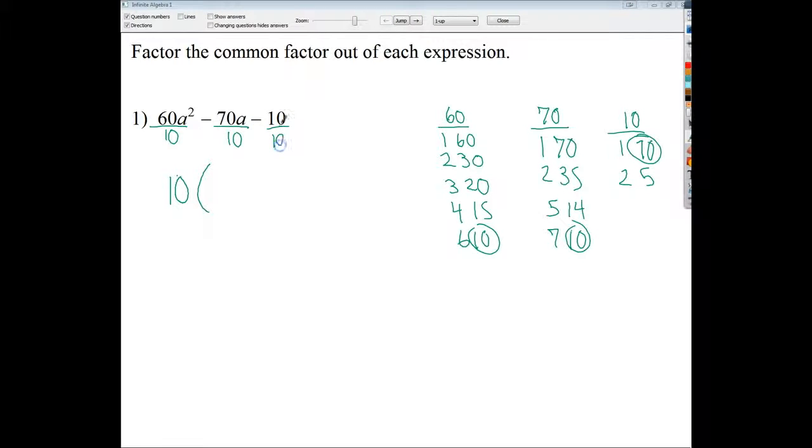That's what I'm doing to get my final answer. So, 60 divided by 10 is 6. The a squared has to stay. 70 divided by 10 is minus 7. And negative 10 divided by 10 is negative 1. So, I end up with 10 times the quantity 6a squared minus 7a minus 1. And if I needed to check the answer, I could just go back and do distributive property. So, essentially, factoring is reverse distributive property. That's it for that one.